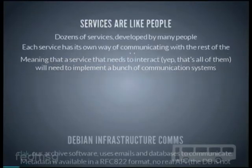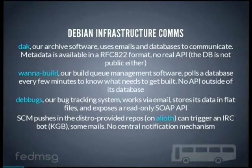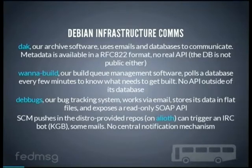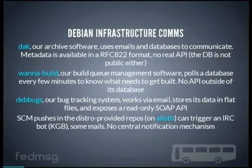For instance, in the Debian infrastructure we have our archive software called 'dak', which mostly uses emails to communicate with the external world and stores its data in a PostgreSQL database. The metadata is available in RFC 822 format — it's like an email — there is no real API for this service and the database is not public. 'wanna-build', which is the infrastructure we use to build packages, polls the database every 15 minutes to know what needs to be rebuilt — no API outside of its closed database. Our bug tracking system works via email only, stores its data in flat files with indexes, and exposes a read-only SOAP API.